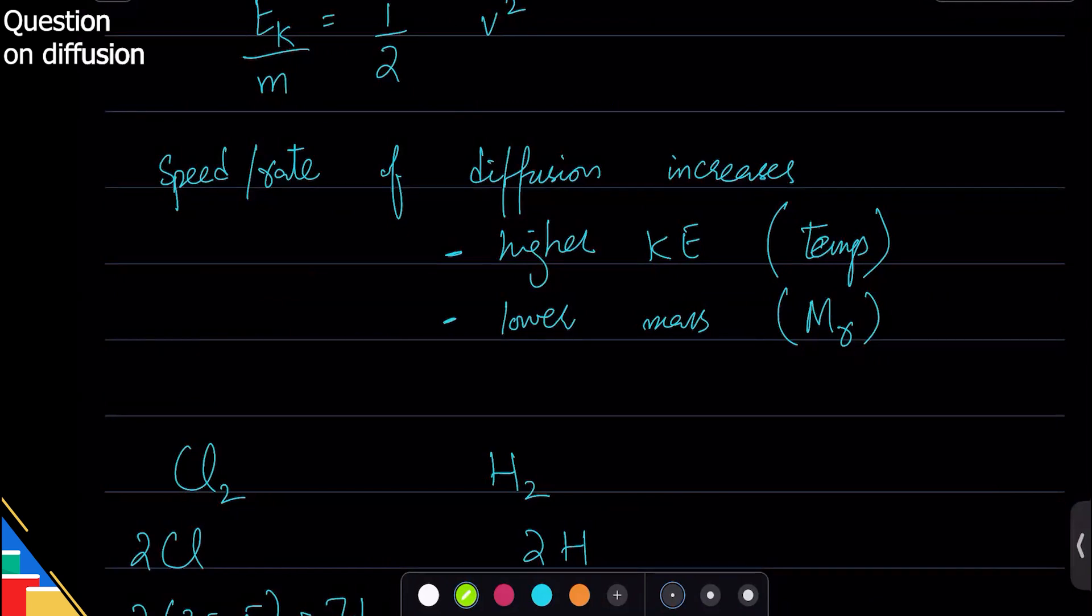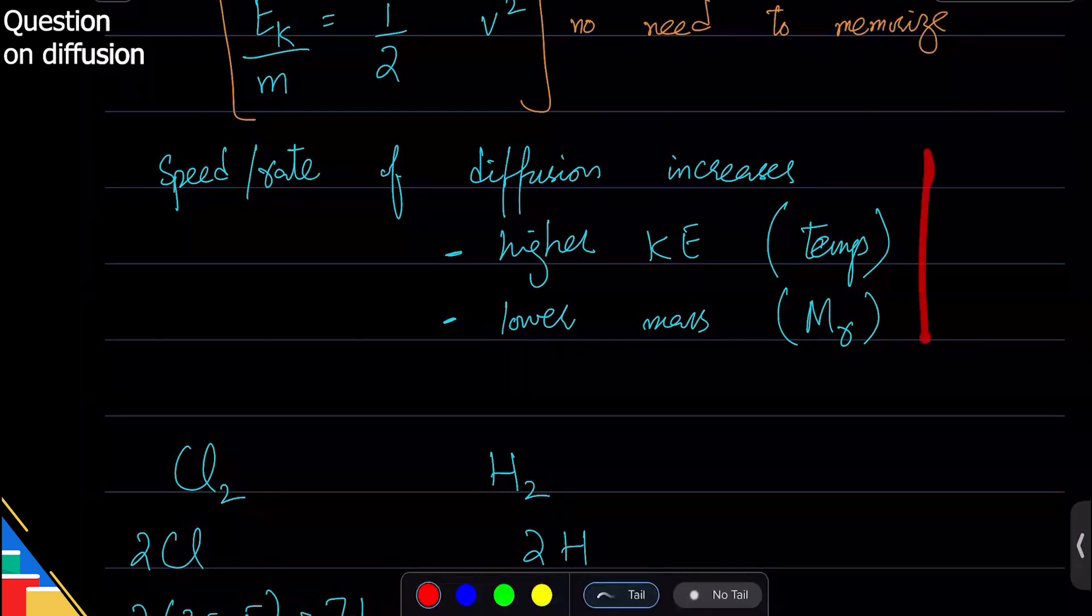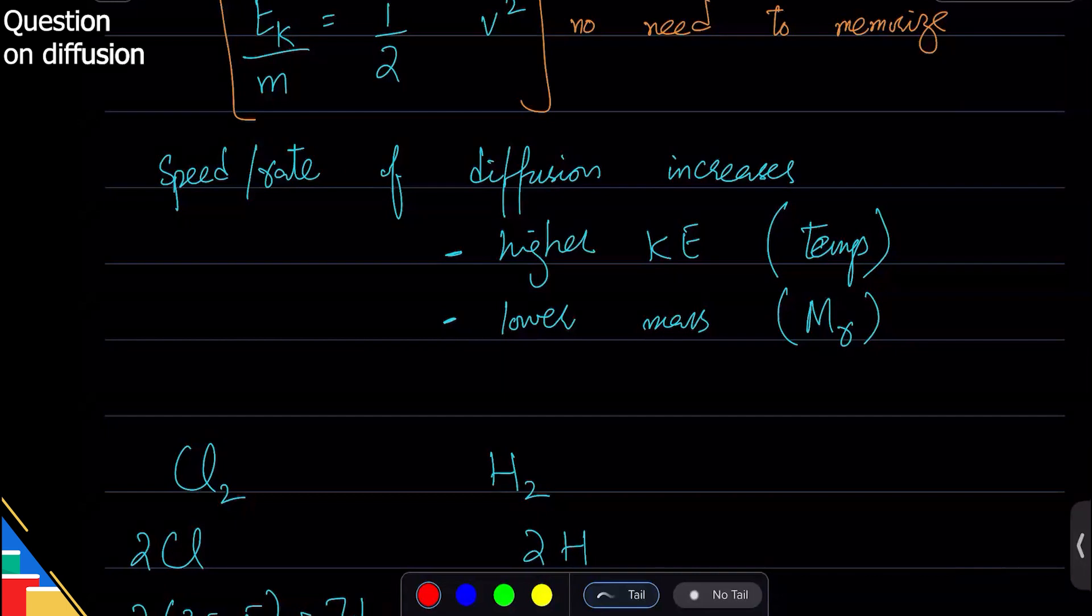So this one I'll put here in the brackets, no need to memorize this, but this is important. If you have two things that are moving, diffusing at different rates, one option is they have different kinetic energy, the other option they have different mass.